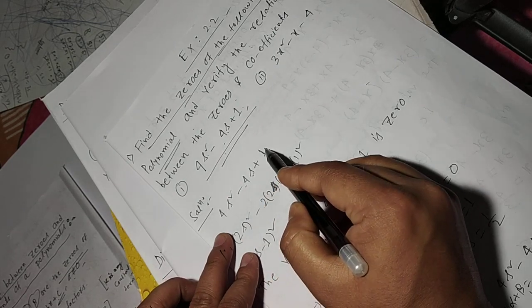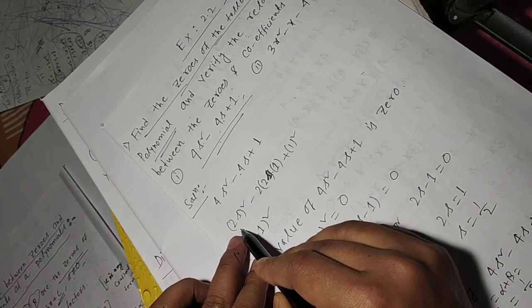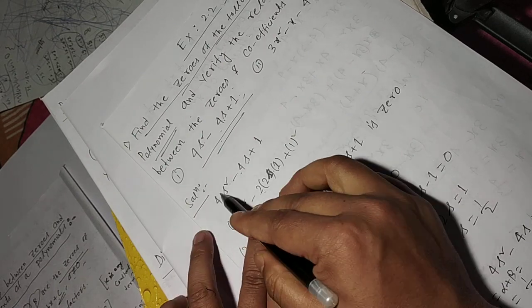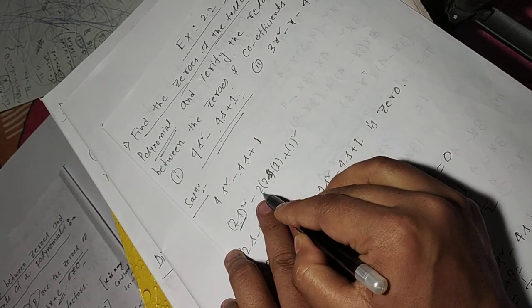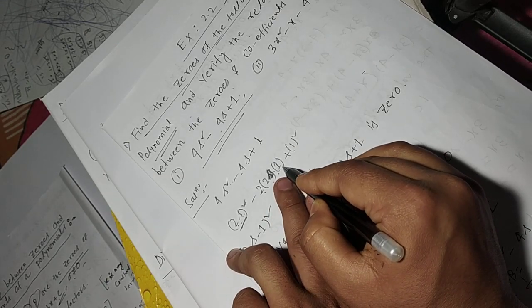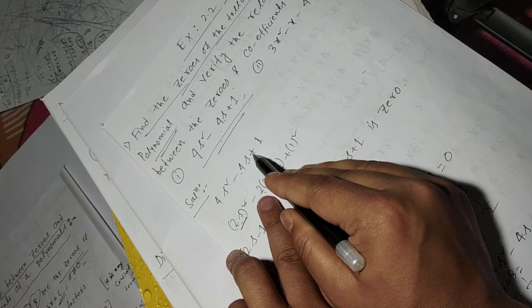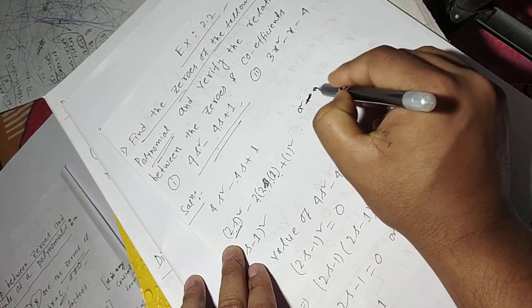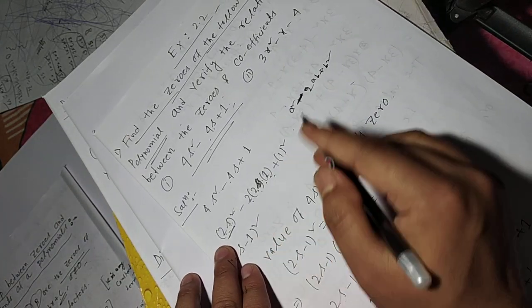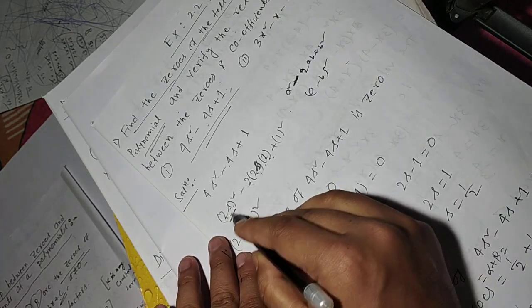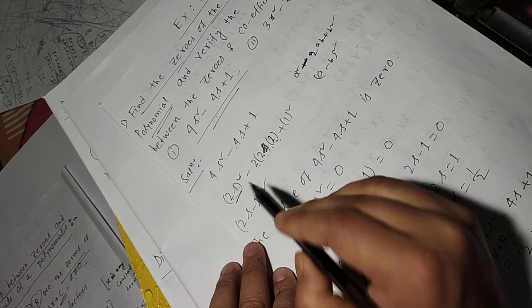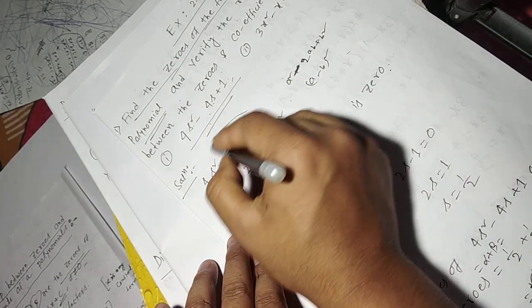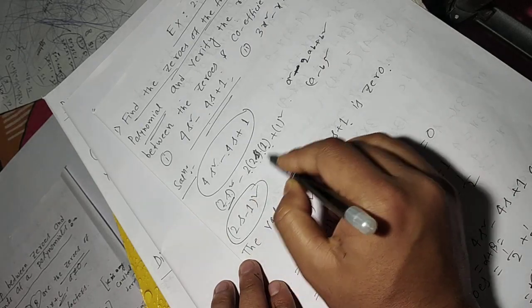Now 4s squared minus 4s plus 1: we can write 4s squared as 2s whole square, minus 4s as 2 times 2s times 1, plus 1 squared. Using the identity a squared minus 2ab plus b squared equals a minus b whole square, where a is 2s and b is 1, we get 2s minus 1 whole square. Setting 4s squared minus 4s plus 1 equals 0 means 2s minus 1 whole square equals 0.